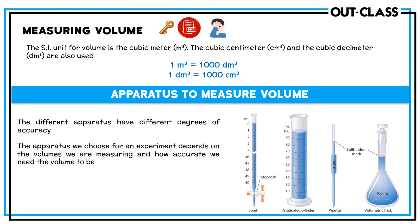Different apparatuses are available to measure the volume of liquids. The first is the burette — a long glass tube with a tap at the lower end with a maximum capacity of 0 to 50 cm³. If you want to measure volume up to 50 cm³ very accurately, you use a burette. Burettes are mostly used in titration experiments when you need to measure unknown volumes within the range of up to 50 cm³.